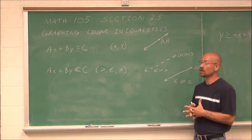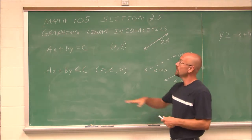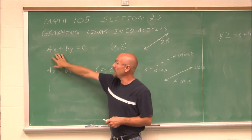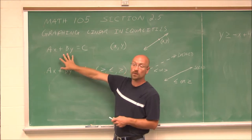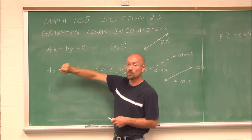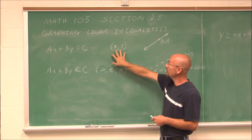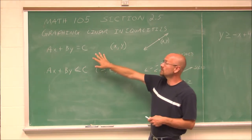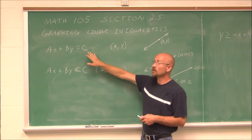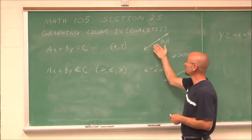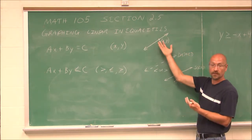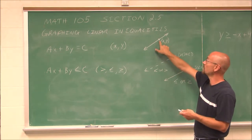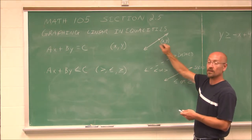Hopefully we recall how to graph linear equations. Here we have a linear equation in general form: ax plus by equals c. We have a linear equation in two variables, and any ordered pair (x, y) that satisfies this equation falls on the line. So if we were to graph it, any point (x, y) would be on that line.